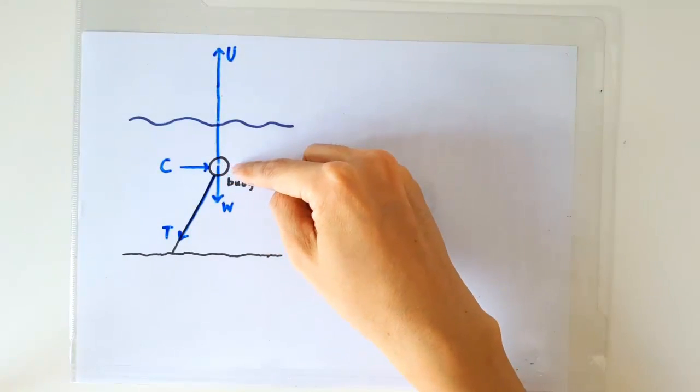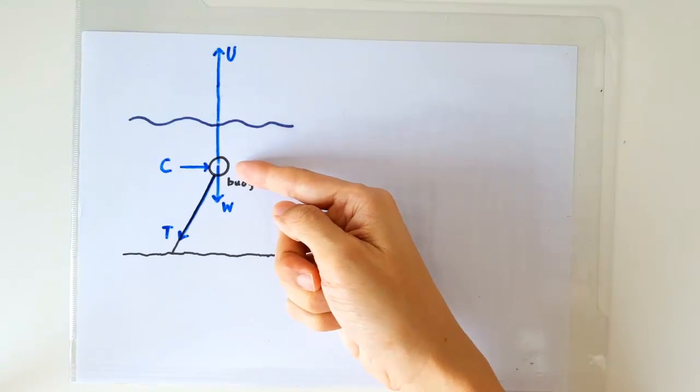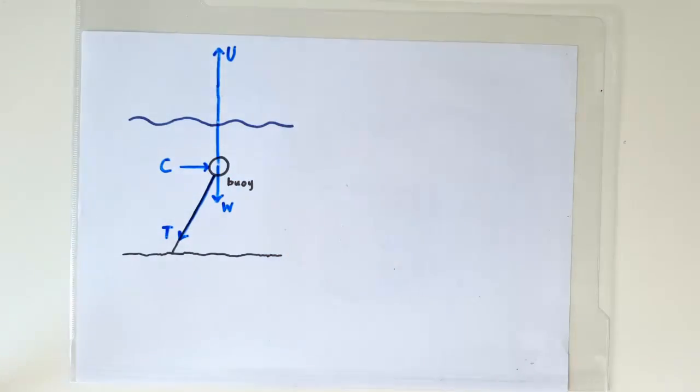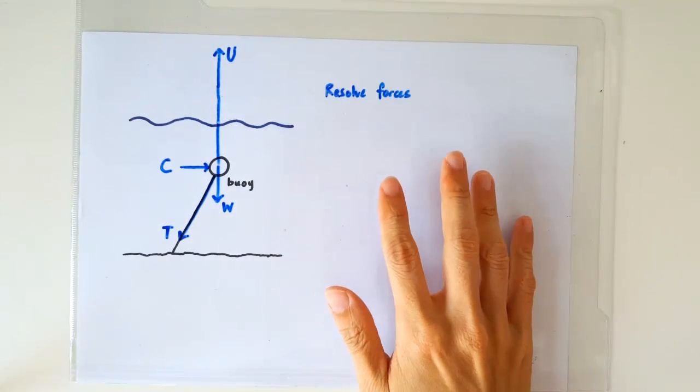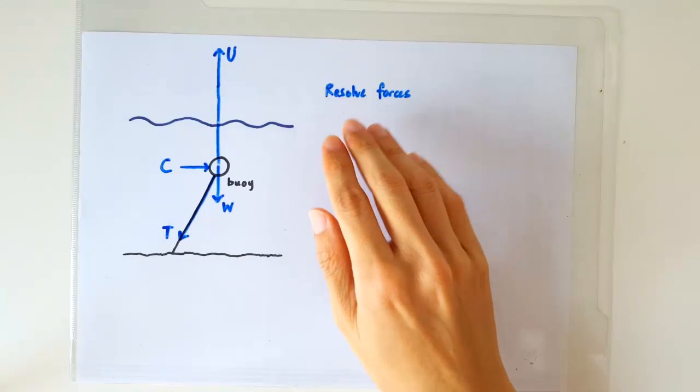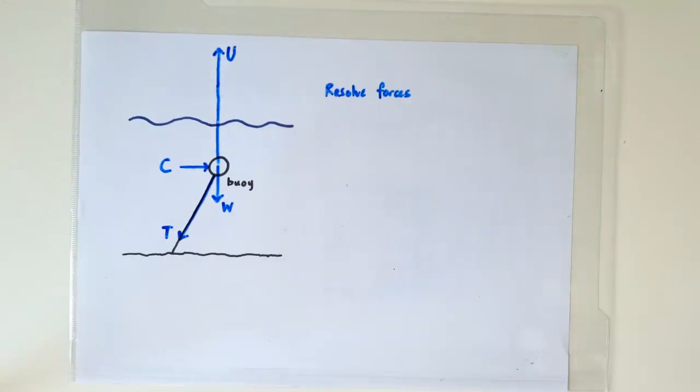So the buoy actually experiences four forces, but it remains stationary because these four forces add up to zero. So if we have to do any calculations, we will usually resolve the forces into the vertical and horizontal components.